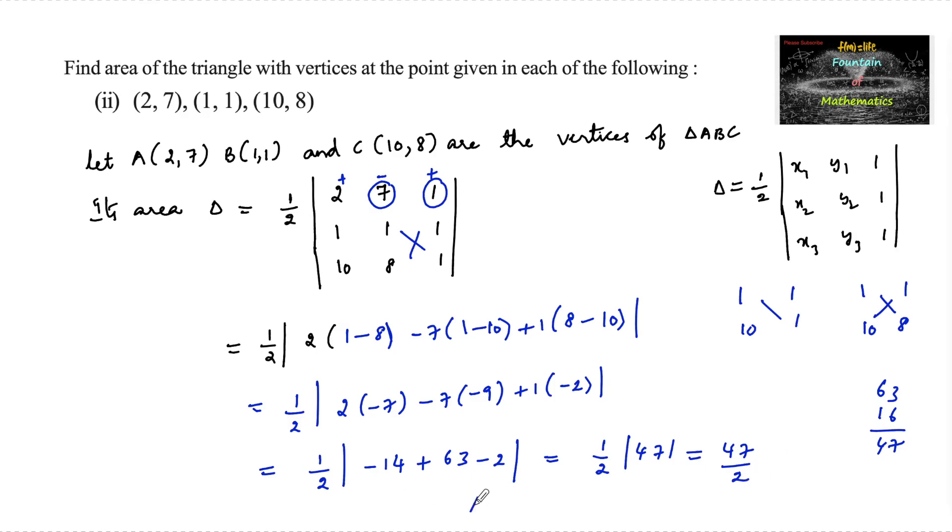The area of triangle is 47 upon 2 square units. So with the given vertices as points (2,7), (1,1), and (10,8), area is 47 upon 2 square units.